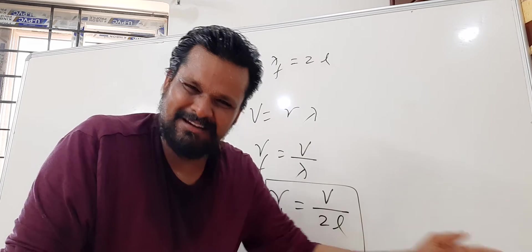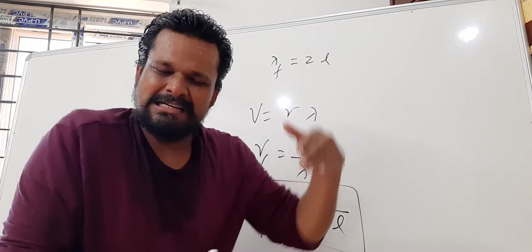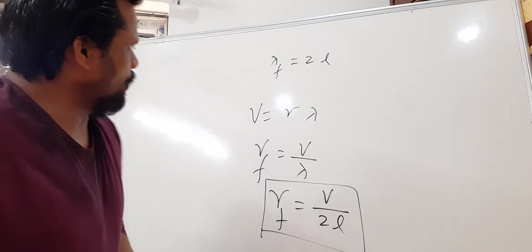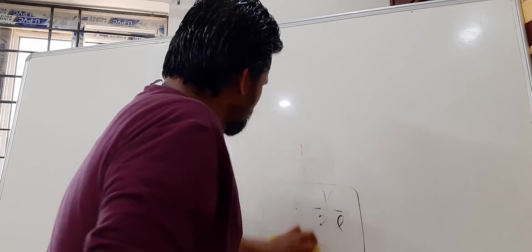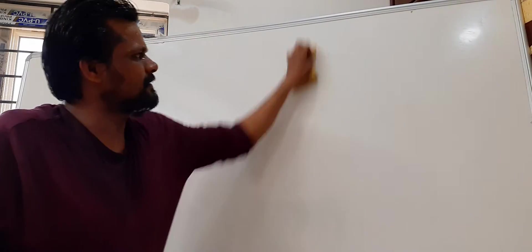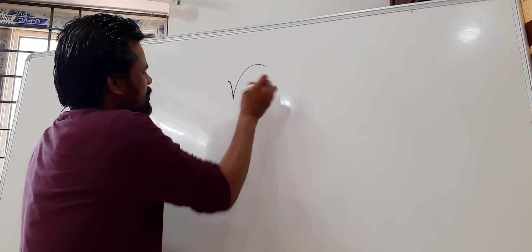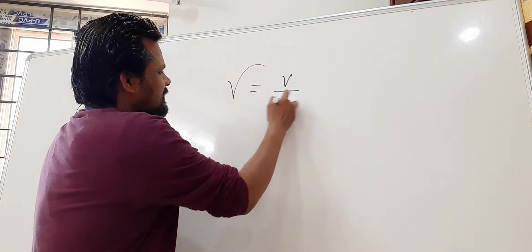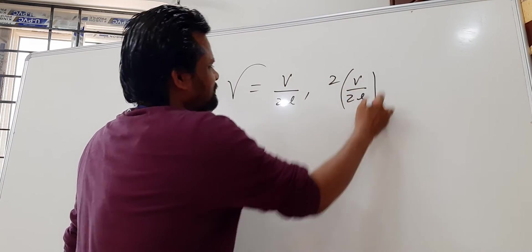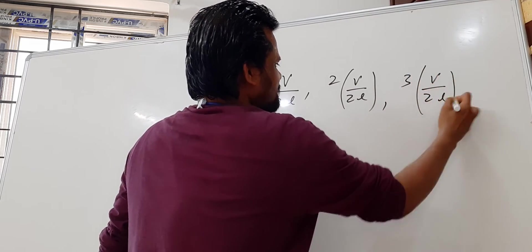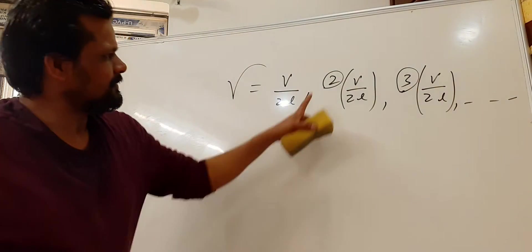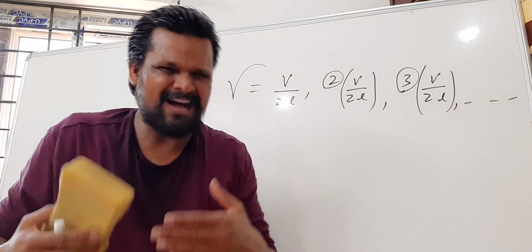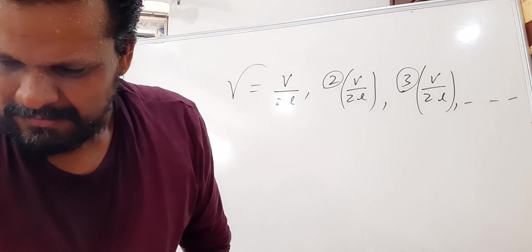The resonance frequencies are: first is V/2L, second is 2V/2L, third is 3V/2L, fourth is 4V/2L, and so on. These are the frequencies at which wind instruments produce louder sound. The gap between successive frequencies is V/2L. These numbers are called harmonics.